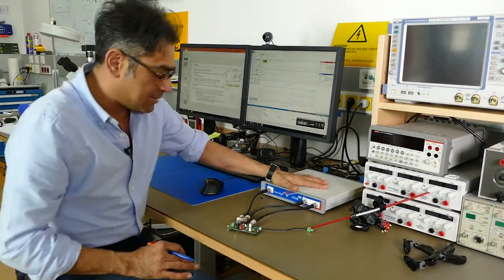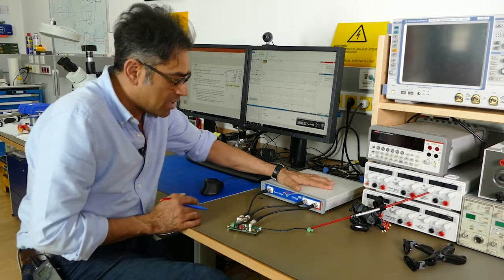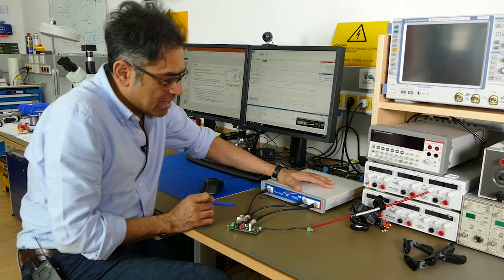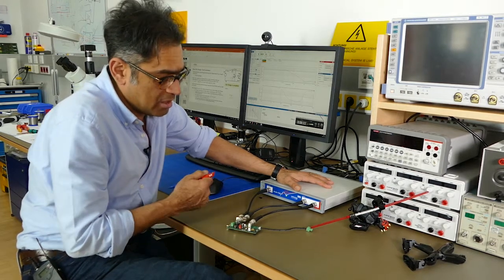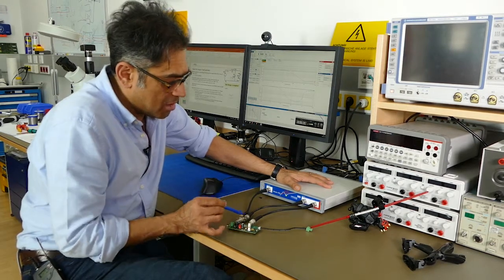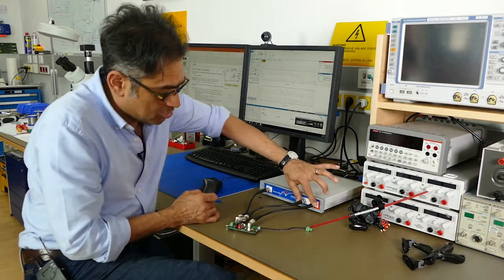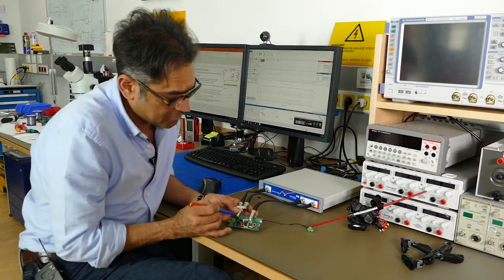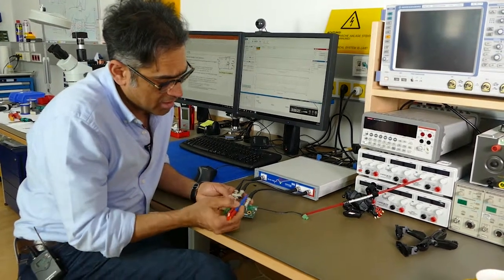Okay so here's our test setup. I've got the Bode 100, I am injecting a signal over here into my filter and then I am plotting the Bode plot of the filter which is being picked up by these two channels over there.